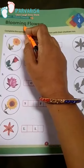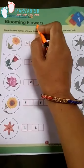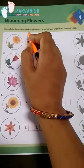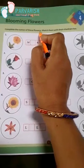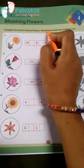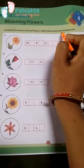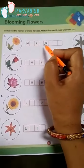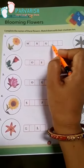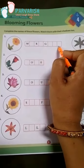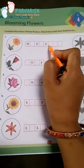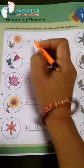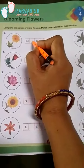Blooming means khilna, flowers means phool. So here we have to complete the name of these flowers and match them with their shadow too. So let's start.